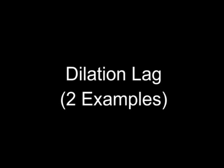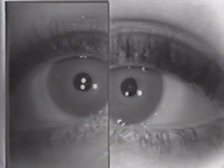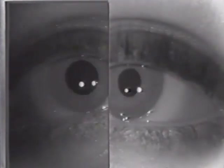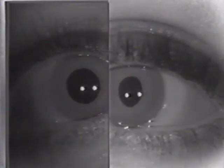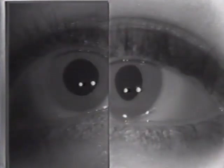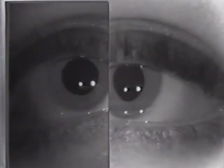Next example, we'll be showing the dilation lag typical of a Horner syndrome. The lights are now turned off, and you can see the right pupil dilates quite fast relative to the left. A normal pupil should dilate in about five seconds. There is a sympathetic defect in the left eye, and you can see that it takes quite a bit longer for that pupil to overcome its defect.